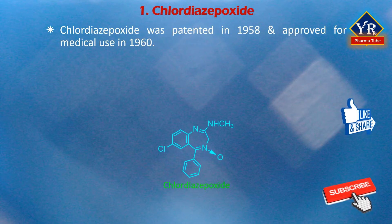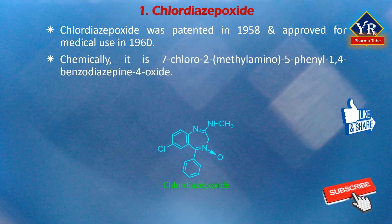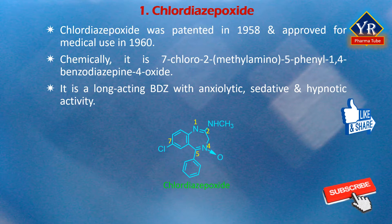Chlordiazepoxide was patented in 1958 and approved for medical use in 1960. Chemically, it is 7-chloro-2-methylamino-5-phenyl-1,4-benzodiazepine-4-oxide. It is a long-acting benzodiazepine with anxiolytic, sedative and hypnotic activity.